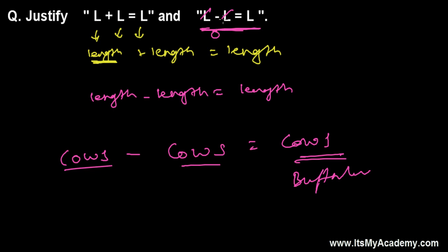We should not think of this mathematically. If we were learning mathematics, then yes, x - x equals zero. But the same idea applied to length — if you subtract the same length, you do get zero, and that zero is still a length dimension. That's also one good point.